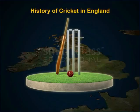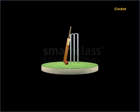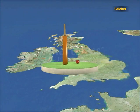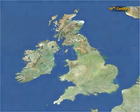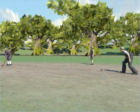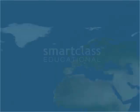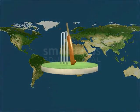History of Cricket in England. In this module, you will learn about the evolution of cricket as a game in England. Cricket originated as a stick and ball game in England around 500 years ago. Till the 18th century, cricket was played under different rules and the stick or bat was shaped as a hockey stick because the ball was bowled underarm. However, as the game became popular, many changes were introduced to make the rules of the game uniform across continents.